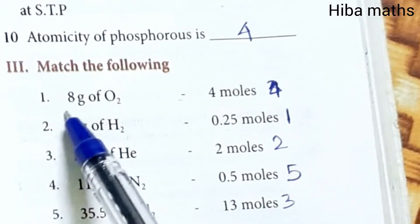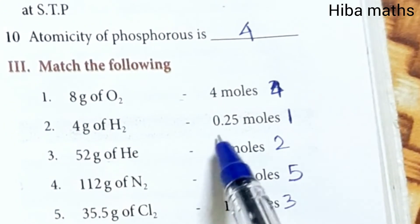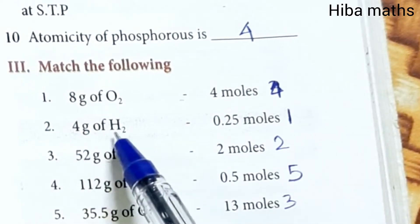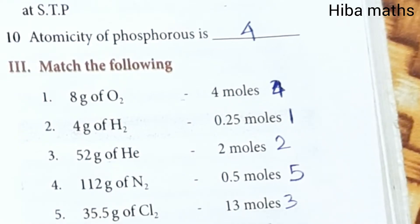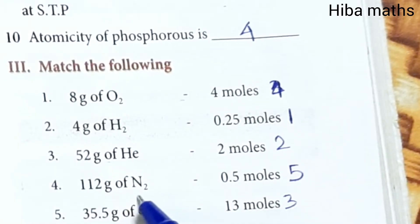Match the following: 8 grams of O2 = 0.25 moles, 4 grams of H2 = 2 moles, 52 grams of helium = 13 moles, 112 grams of N2 = 4 moles, 35.5 grams of Cl2 = 0.5 moles.